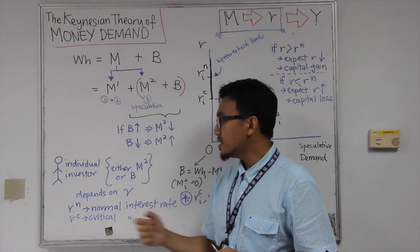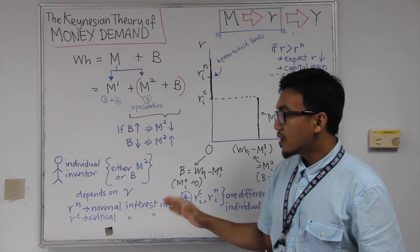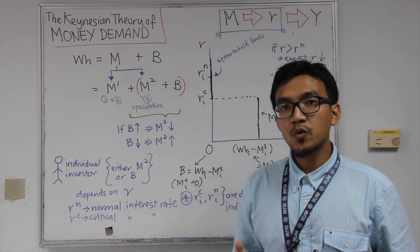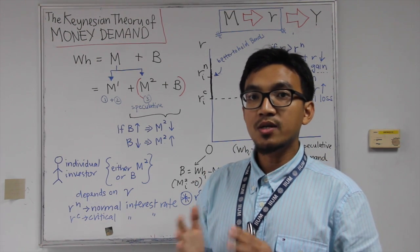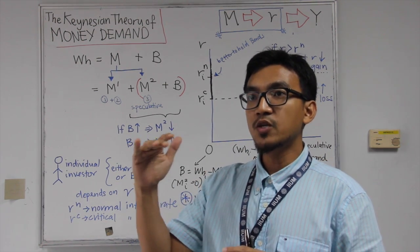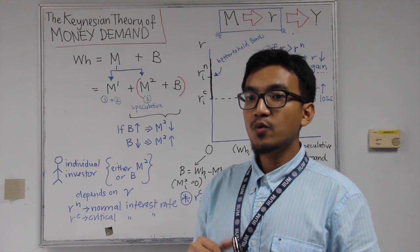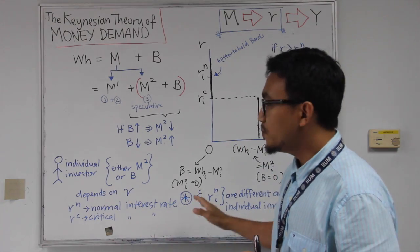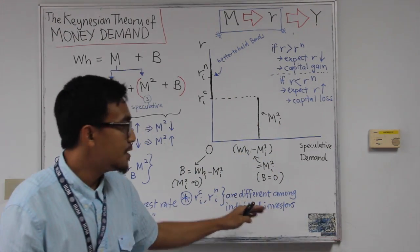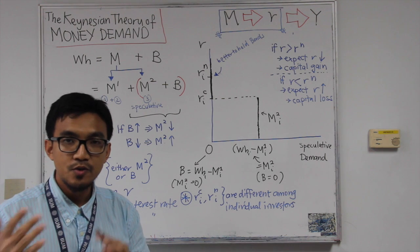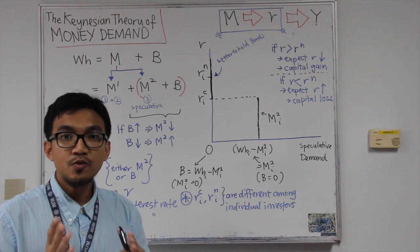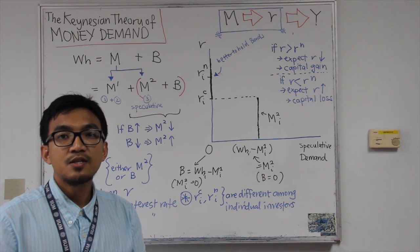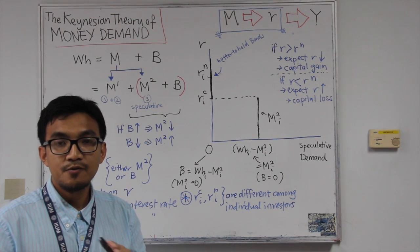According to Keynes, each individual investor would have their own perception and their own calculation of what should be the normal interest rate. This would be different — each individual would have a different expectation, a different calculation — according to each individual investor, what is the normal level for interest rate.